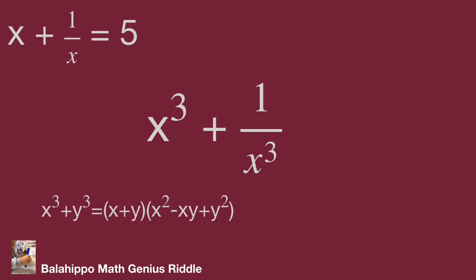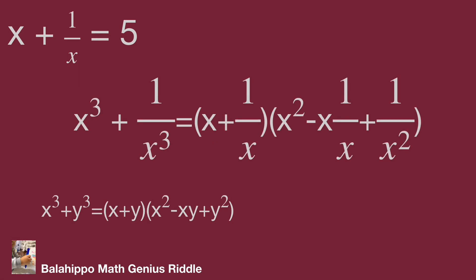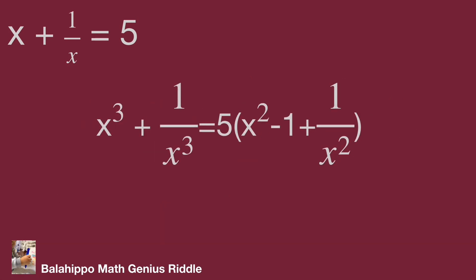Using the formula x cubed plus y cubed equals (x plus y) multiplied by (x squared minus xy plus y squared), substitute x and 1 over x. Then substitute x plus 1 over x with 5 into the equation and simplify as x cubed plus 1 over x cubed equals 5 times bracket x squared plus 1 plus 1 over x squared bracket.